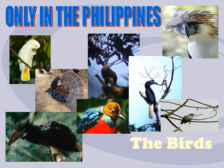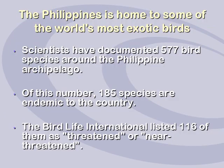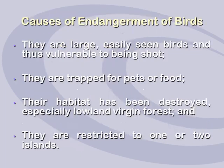Additionally, the tropical location of the country and the once extensive areas of rainforest contribute to this. As for endemic organisms, let's start with birds. The Philippines is home to some of the most exotic birds — there are around 577 bird species in the Philippine archipelago, and out of that, 185 are endemic. However, 116 are threatened or near-threatened, according to BirdLife International.